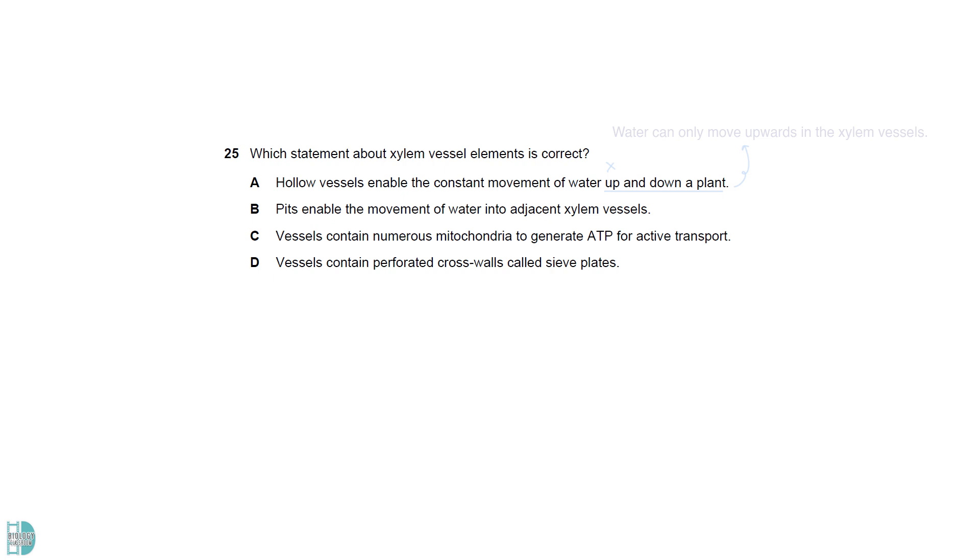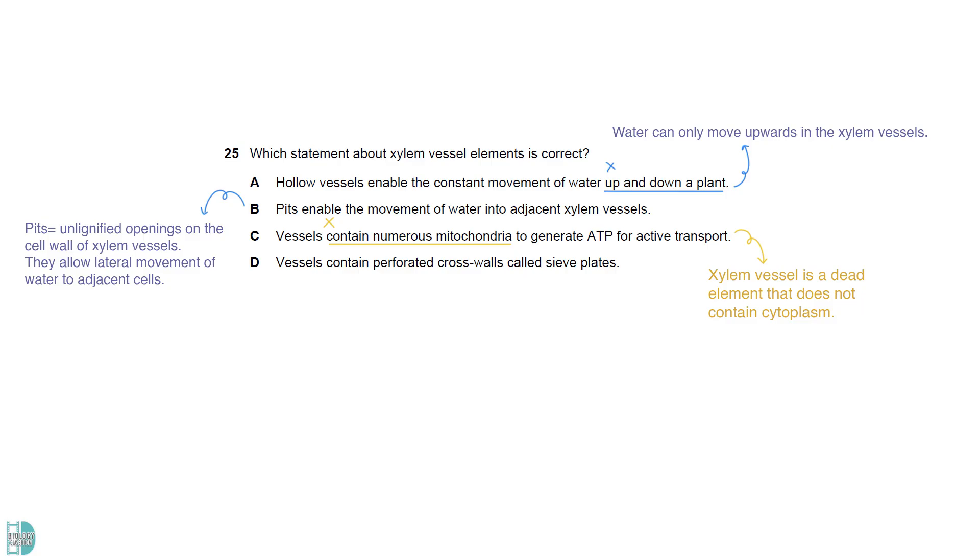A is wrong because water can only move upwards in the xylem vessels. B is correct. Pits, the unlignified openings on the cell wall of xylem vessels, allow lateral movement of water to adjacent cells. Xylem vessel is a dead element that does not contain cytoplasm. So, mitochondria would not be present. The end walls between the cells are fully broken down to form a continuous column. So, D is incorrect. Only the sieve tube elements contain the sieve plate.